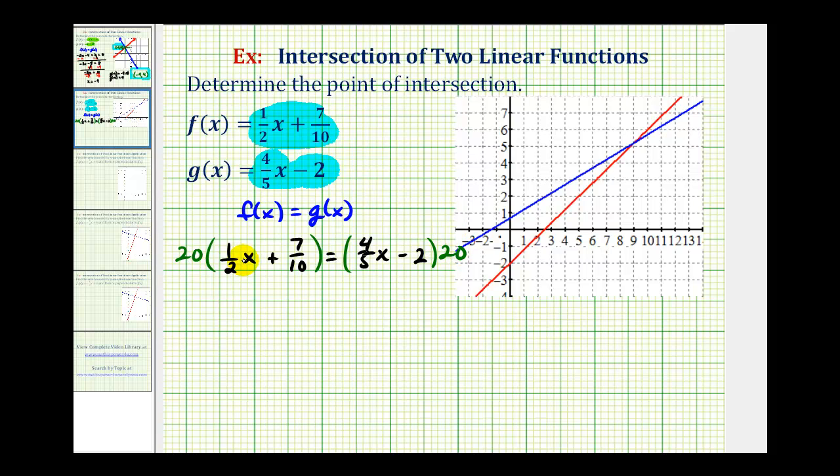So we'd have 20 times 1/2 x, which I'll write as 20 over 1 times 1/2 x plus 20 over 1 times 7/10 must equal 20 over 1 times 4/5 x minus 20 times 2. Now we'll go ahead and simplify, which should eliminate all of the fractions.